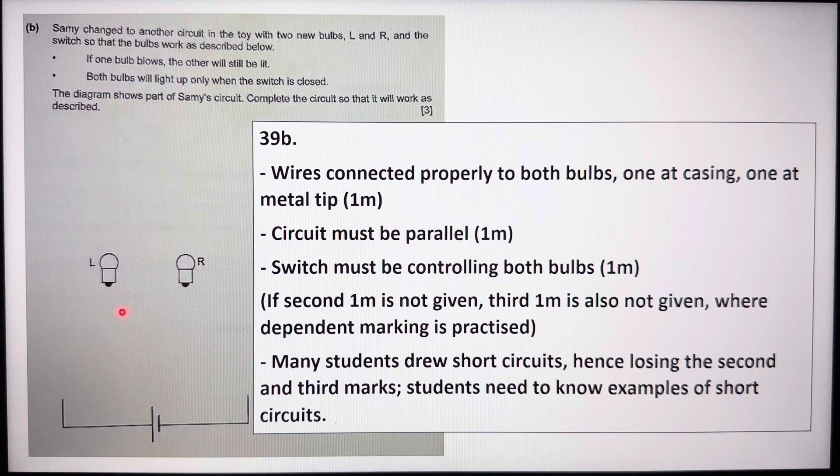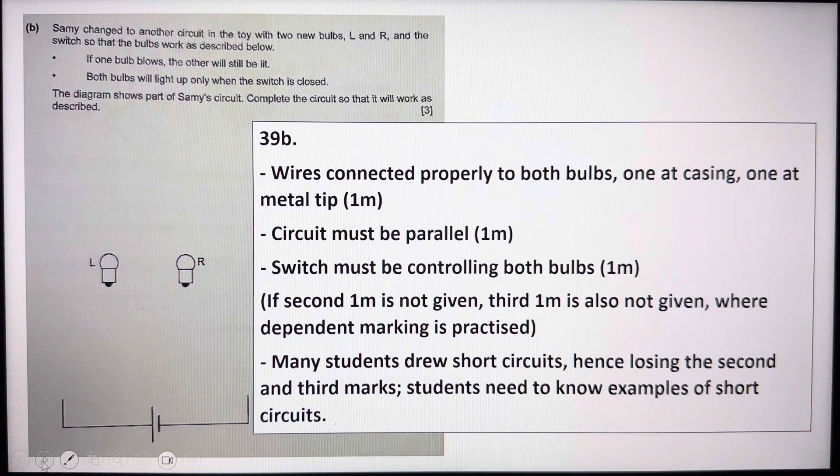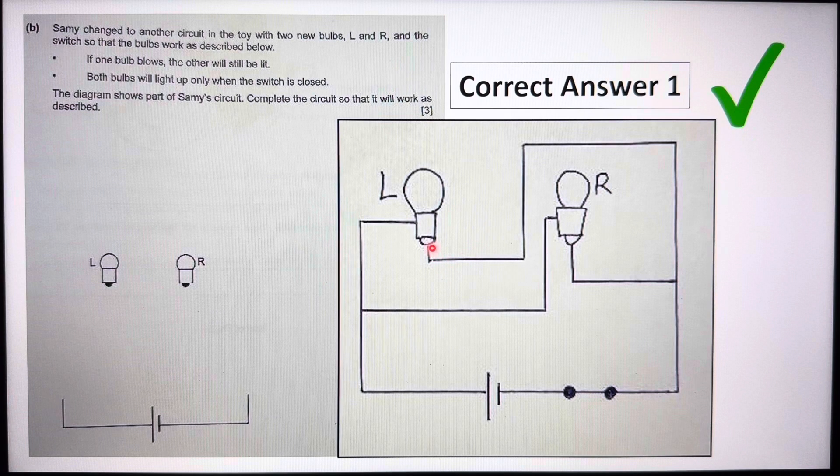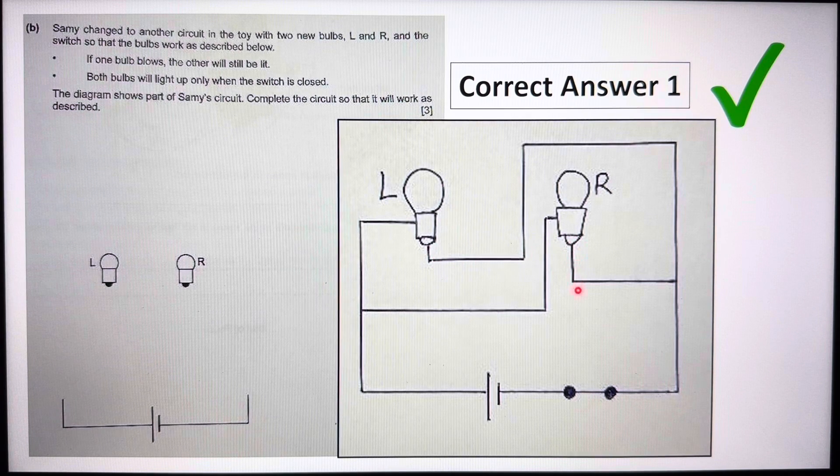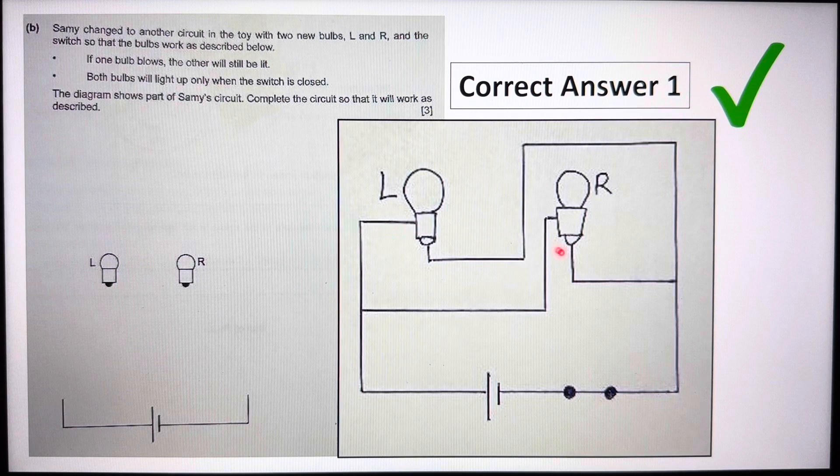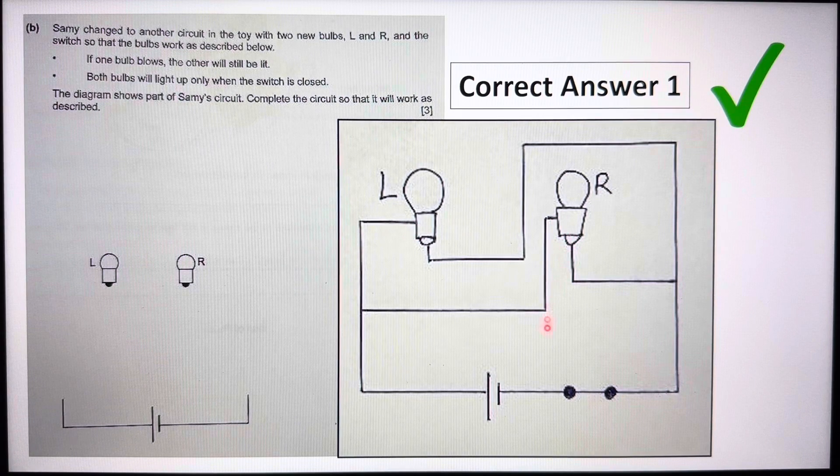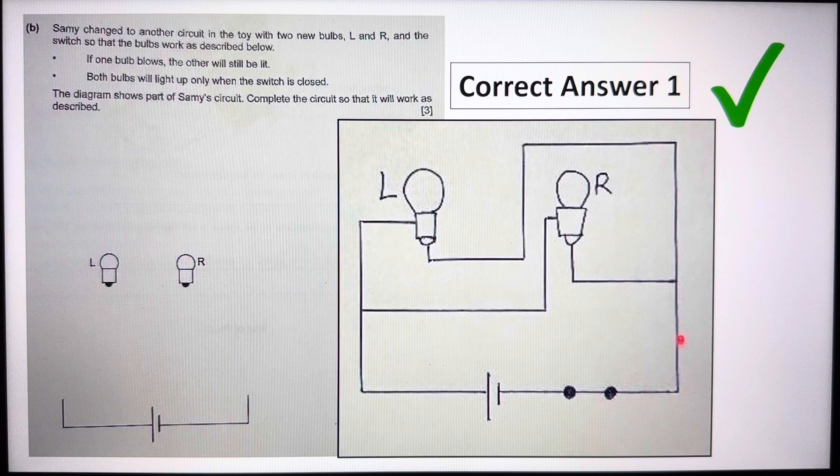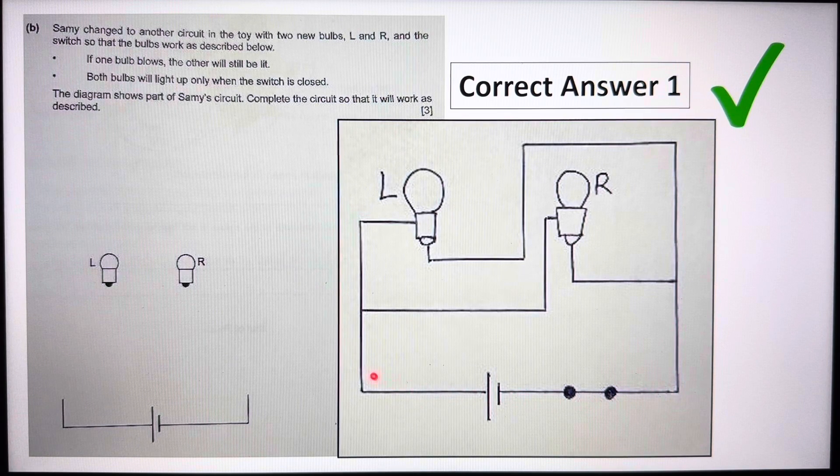So the first correct answer, you can see that both bulbs are connected in parallel, connected to the metal tip, the metal casing, metal casing correctly. And then actually the switch has to be anywhere here to here.